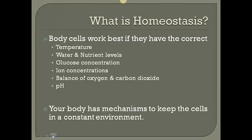Your body has different mechanisms — different ways — that it keeps your cells in a constant environment. Your stomach is always acidic, and your body has ways of making sure it stays acidic. Your temperature is always at about 98.6 degrees Fahrenheit, and your body has ways of making sure that your temperature stays that way.